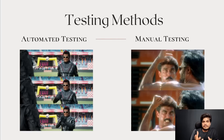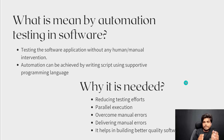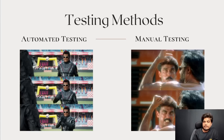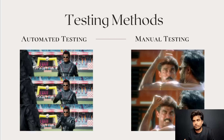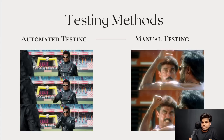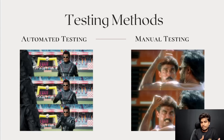Now let's talk about testing methods. Generally, there are two methods for testing: automated testing and manual testing. In automated testing, we use automated tools to test the software against its compliance and requirements.